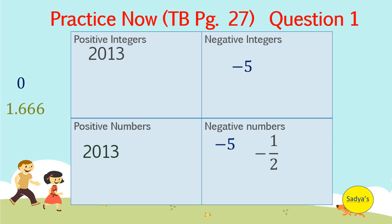1.666. No sign indicates the number is positive but since it is a decimal, so it ain't an integer. Hence 1.666 is a positive number. I hope it is clear. Let's do the remaining ones quickly.